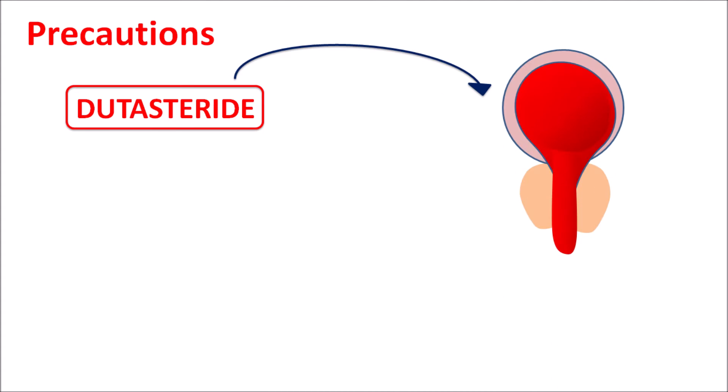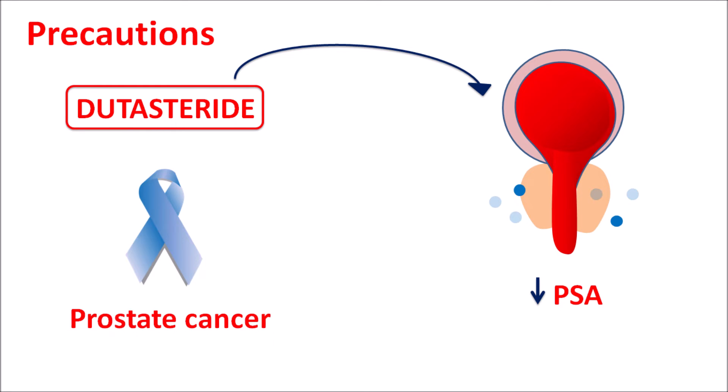One important precaution is that this drug acts on the prostate gland, so it can reduce PSA (Prostate Specific Antigen) levels. Normally, PSA levels are elevated in certain conditions such as prostate cancer. But in men with prostate cancer, dutasteride can reduce the PSA levels.